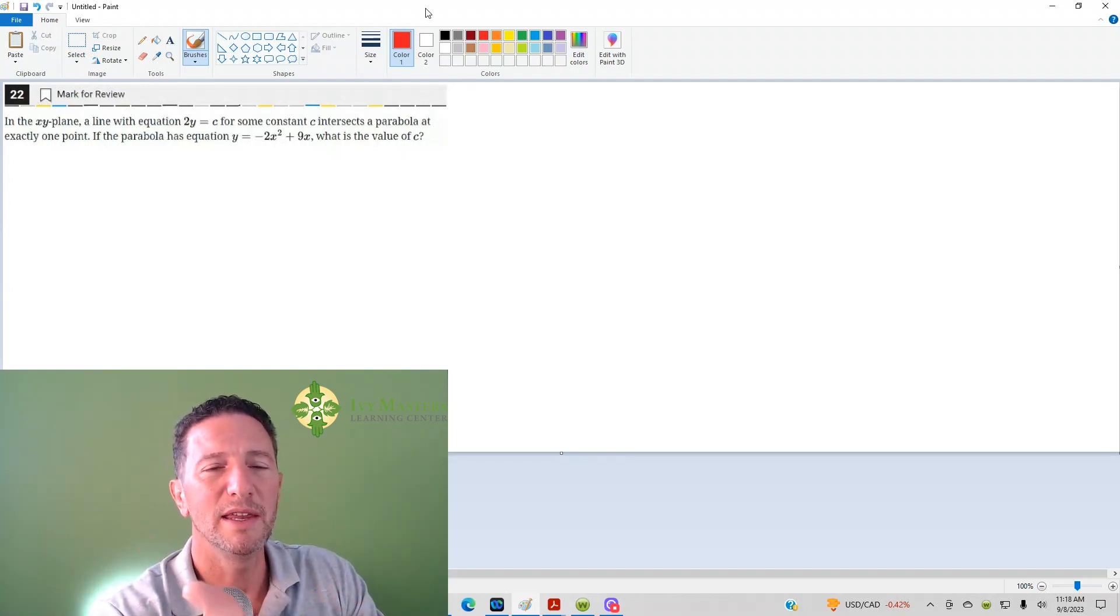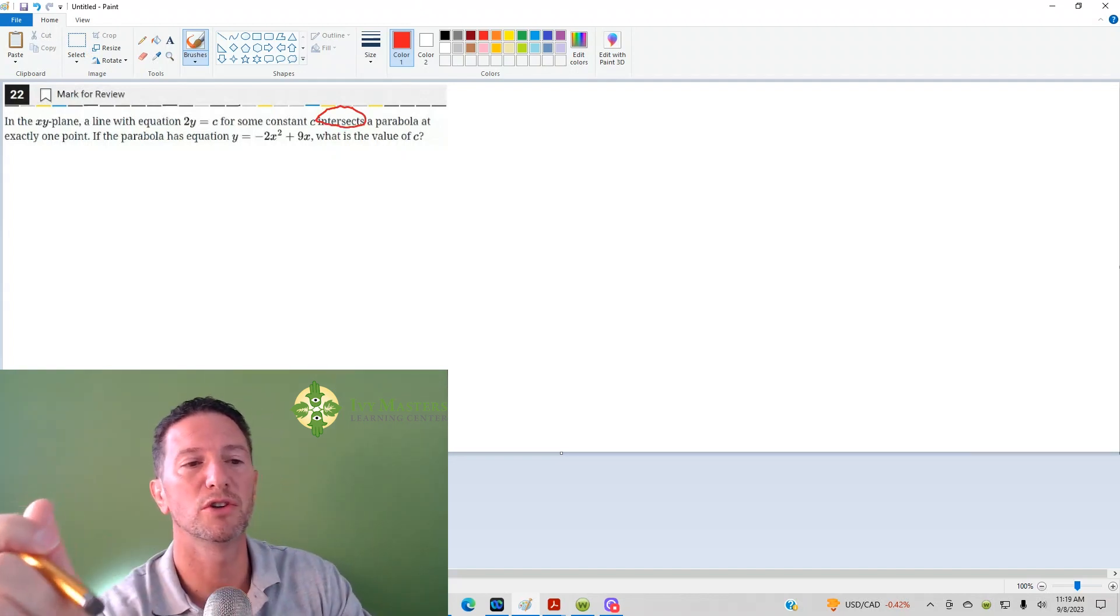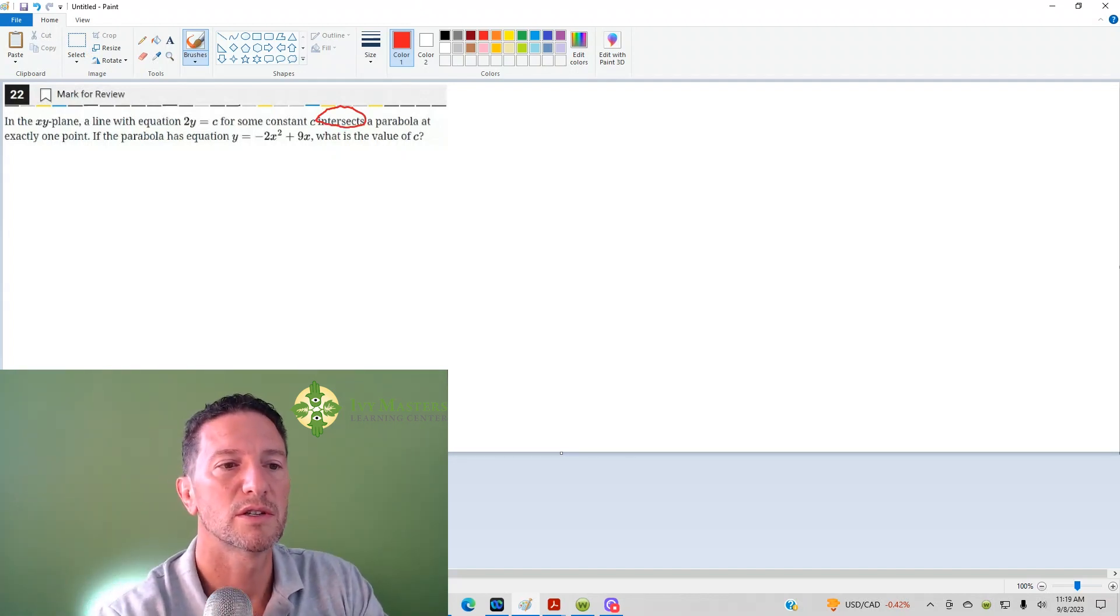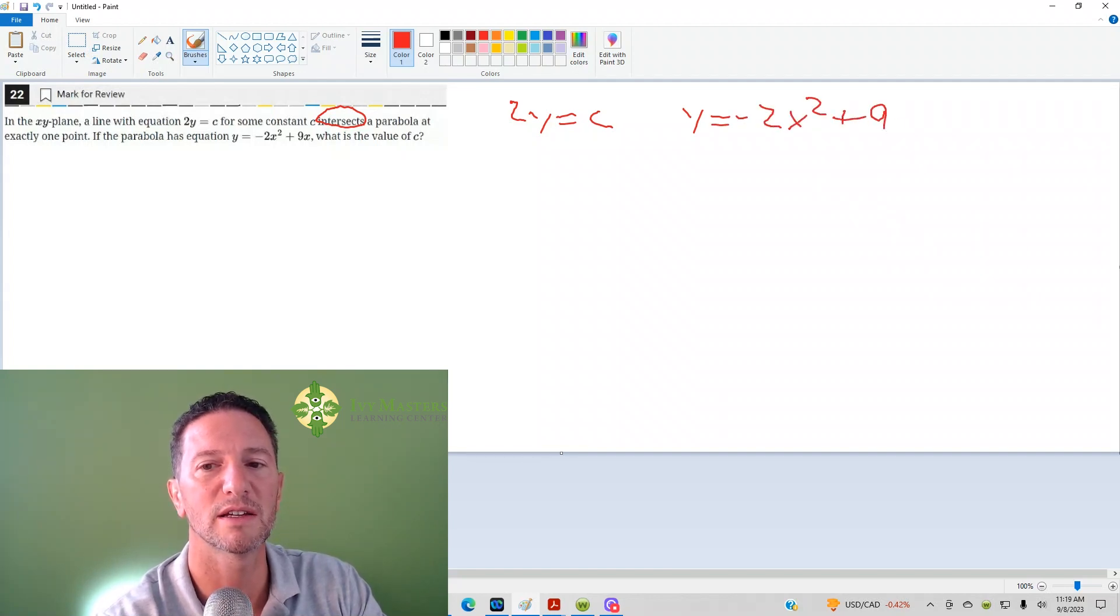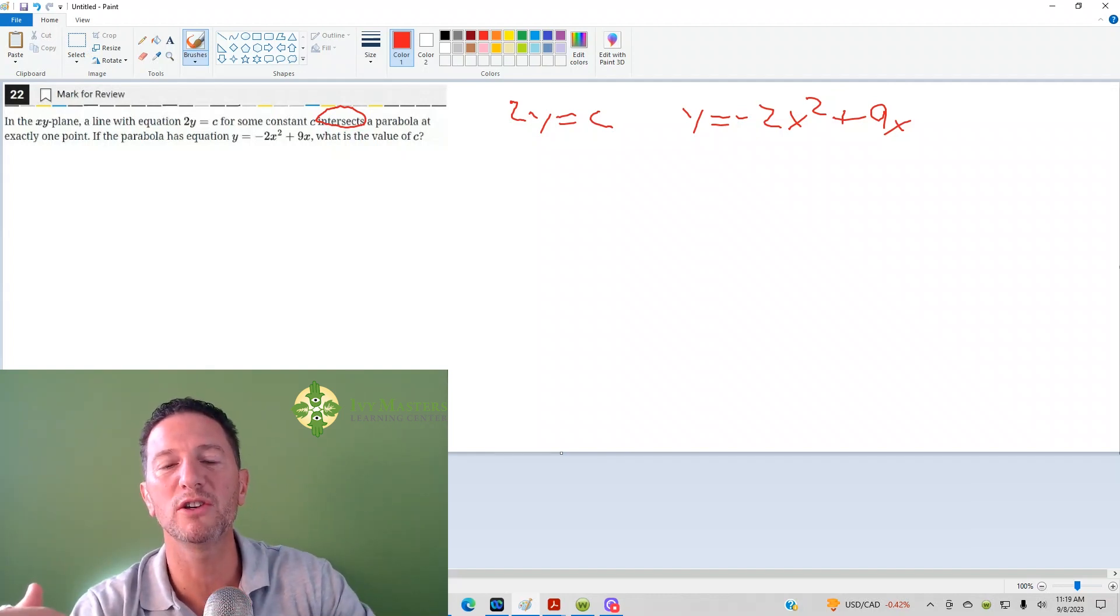Anytime it has two equations, typically you're doing a system of equations. Anytime you see the word intersects, then you also know you should do a system of equations. What do those two equations have in common? 2Y equals C and Y equals negative 2X squared plus 9X. What they have in common is Y, so we're going to use Y to do this system of equations.